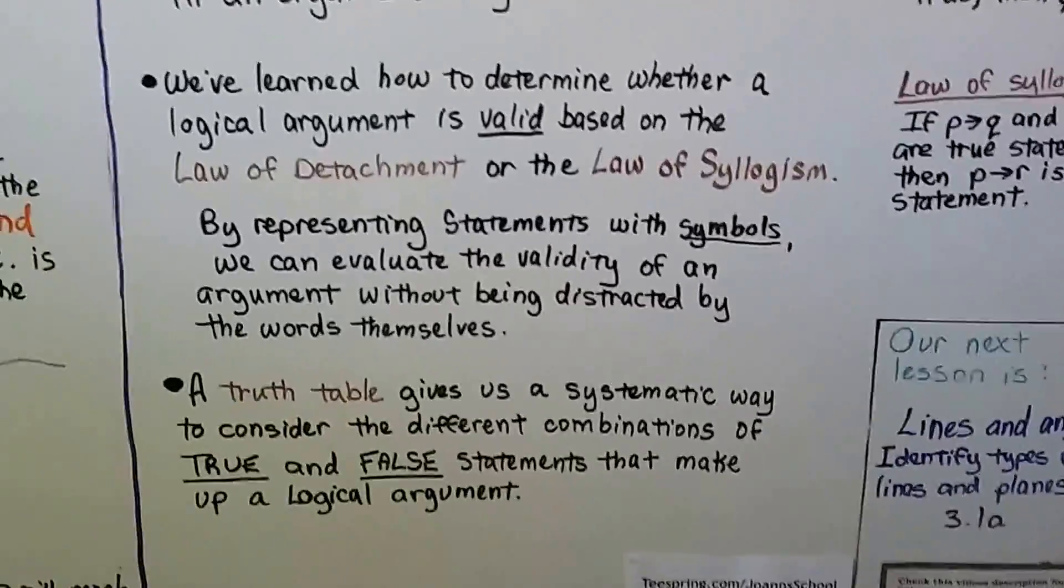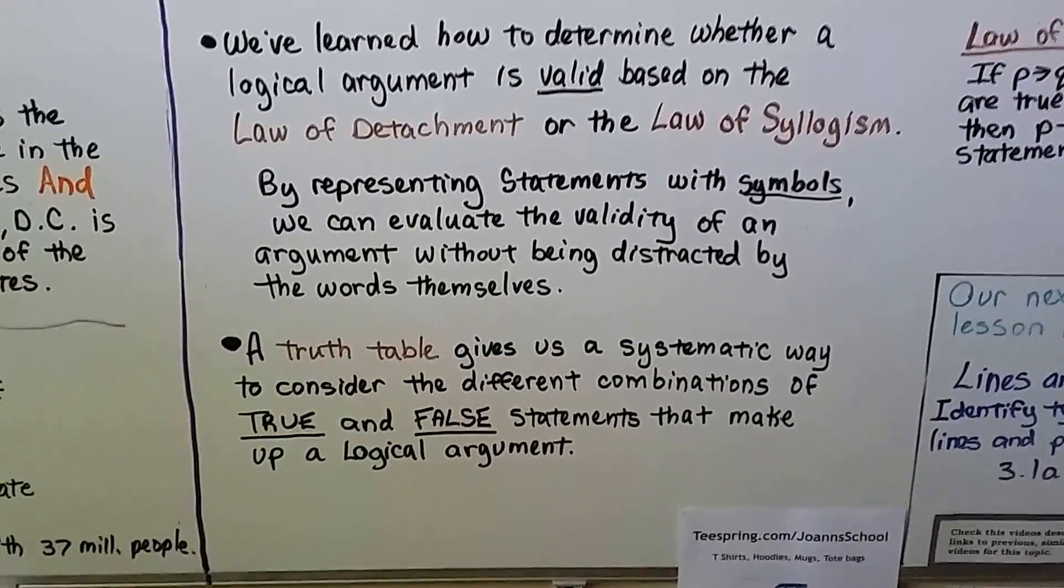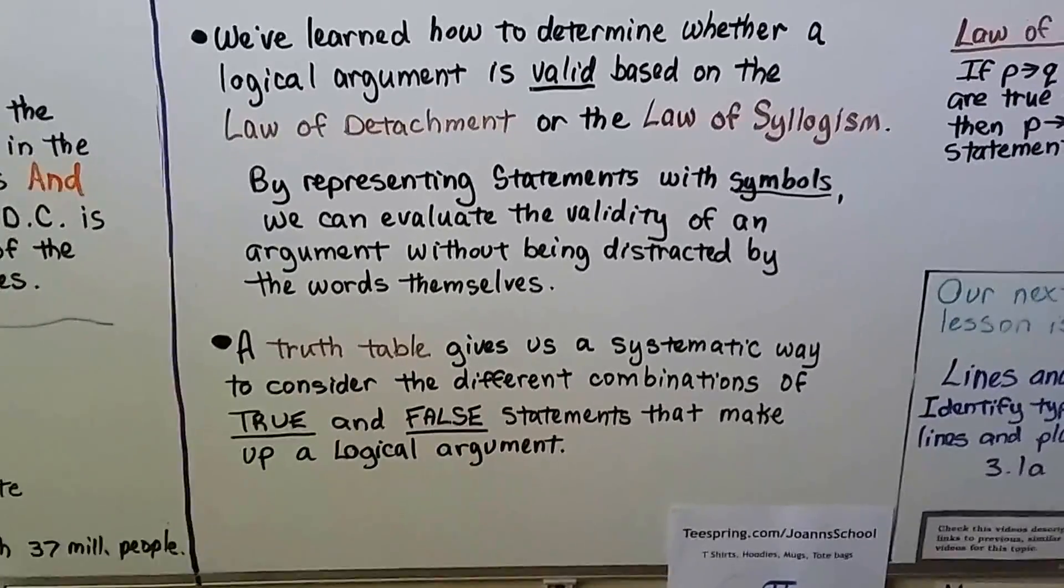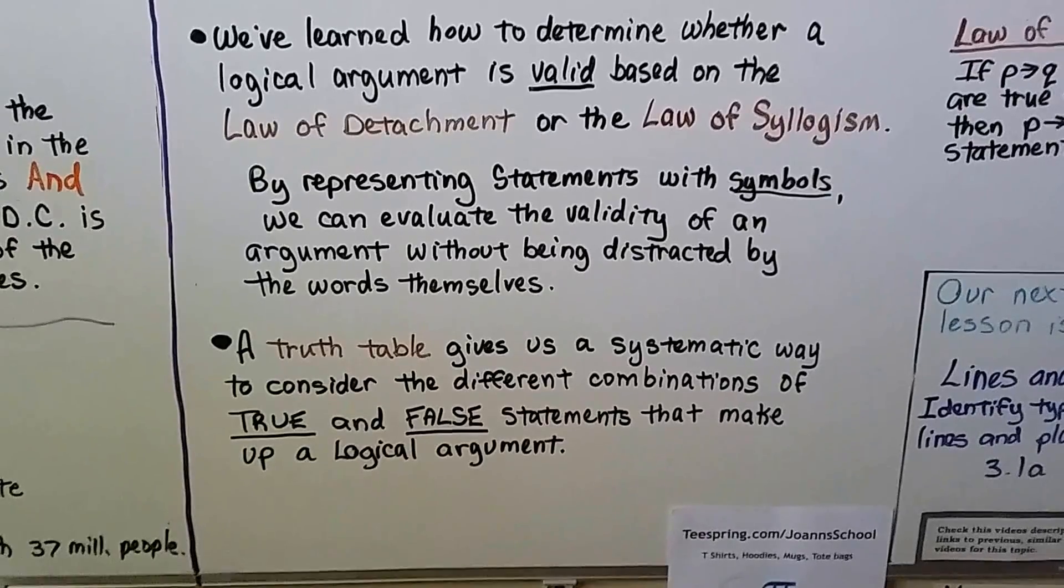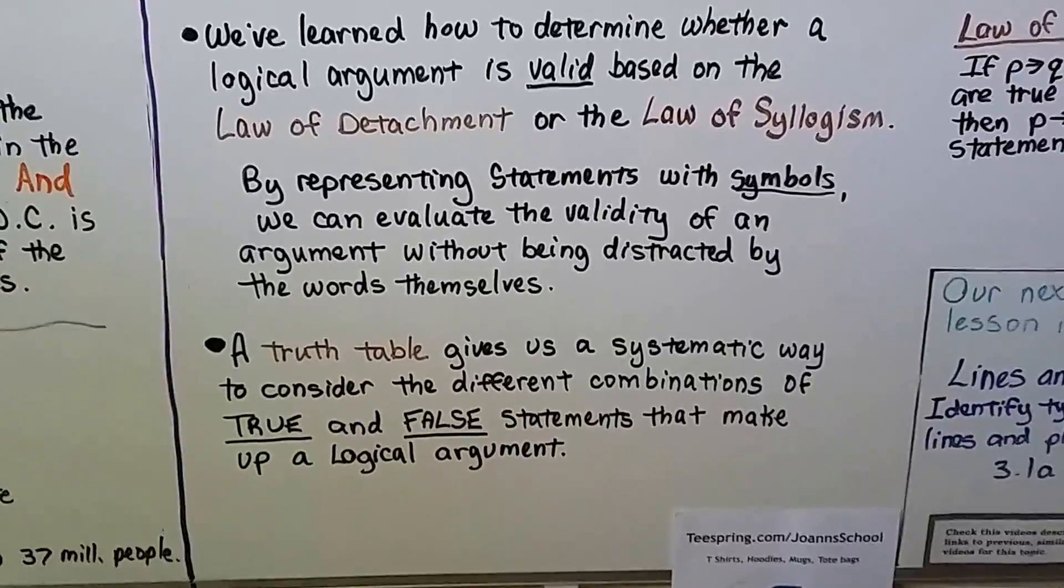By representing statements with symbols, we can evaluate the validity of an argument without being distracted by the words themselves. A truth table gives us a systematic way to consider the different combinations of true and false statements that make up a logical argument.